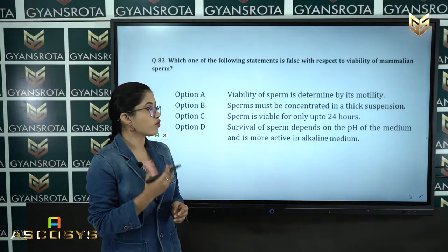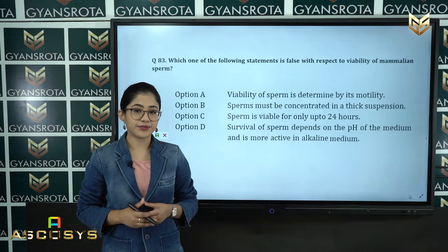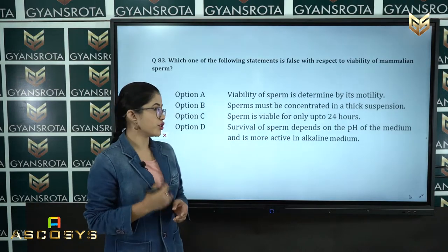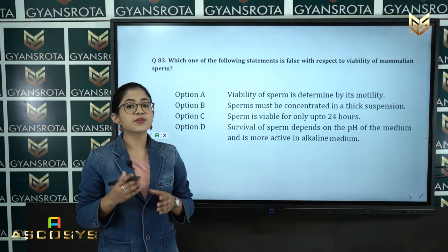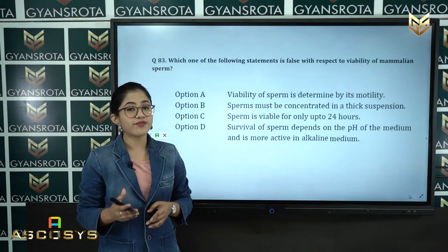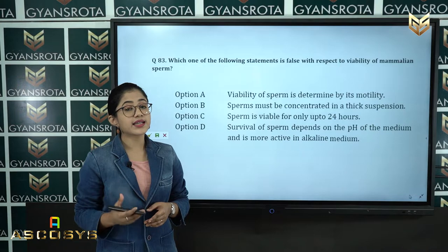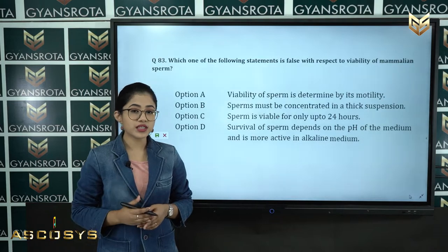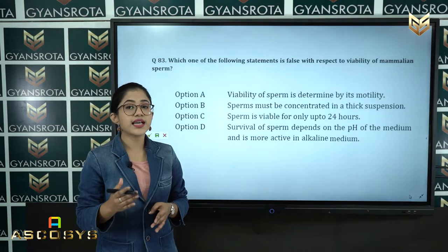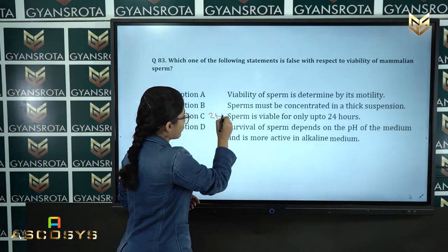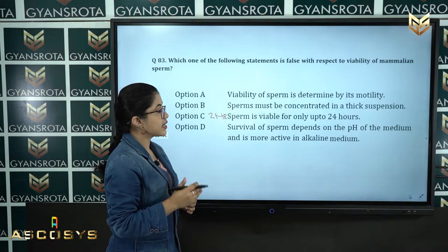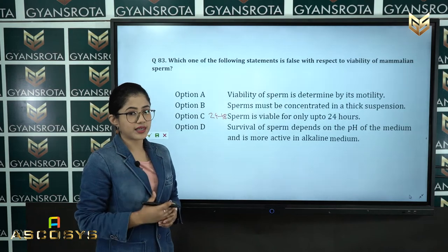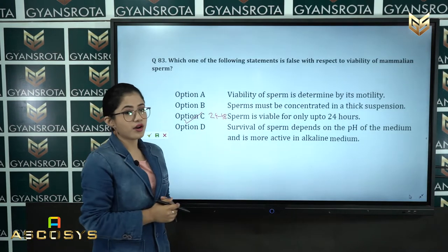From these four options we have to select the false statement with respect to viability of mammalian sperm. In option C, it states that sperm is viable for only up to 24 hours. This is the incorrect statement because sperm is viable for 24 to 48 hours. So option C is the correct answer for this question.